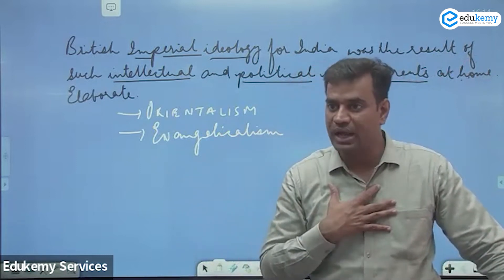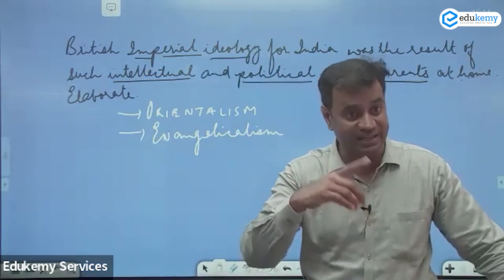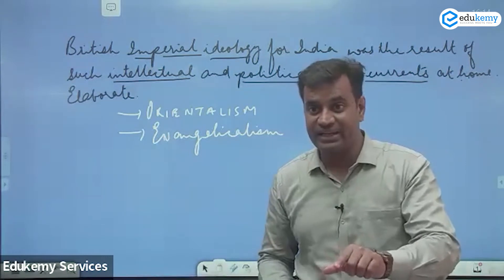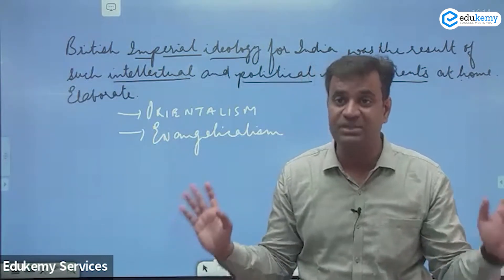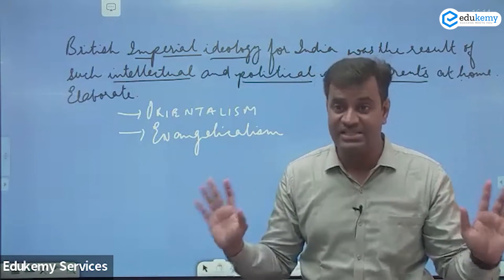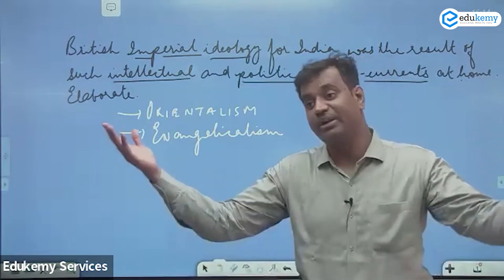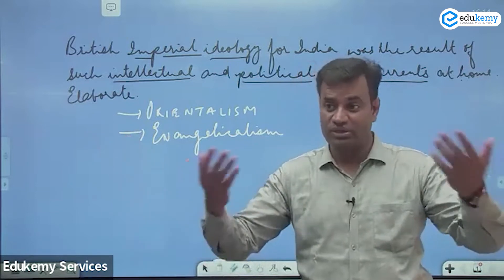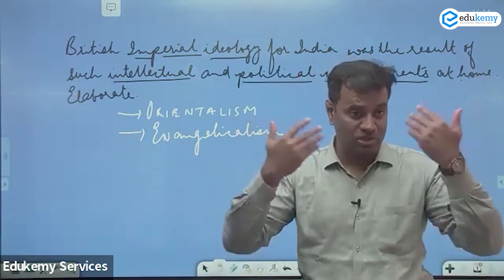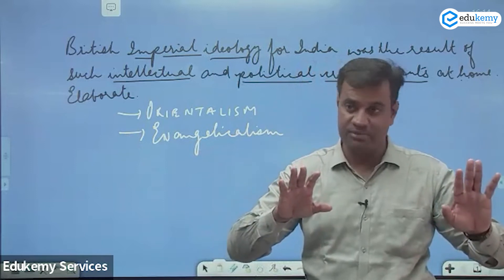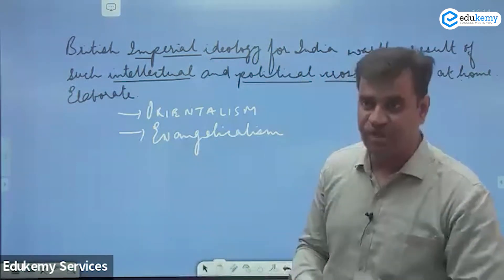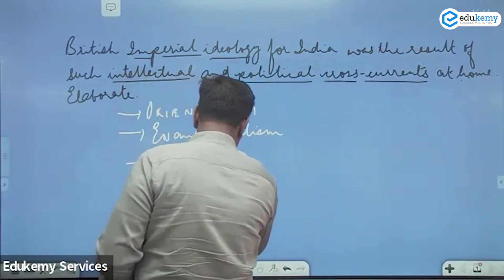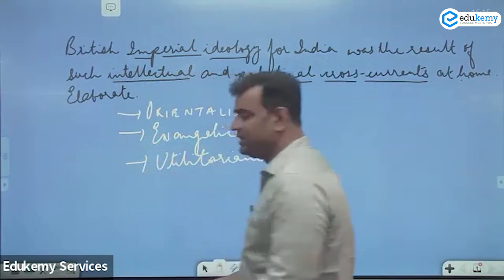Once British rule had been established, it needed to be justified. They needed to make it clear they were there in India for the betterment of Indians — that India was nothing but a white man's burden, that they were on a civilizing mission. They even went on to claim India was a land of snake charmers and nothing more, and they were on a civilizing mission.